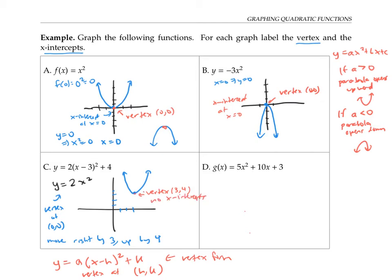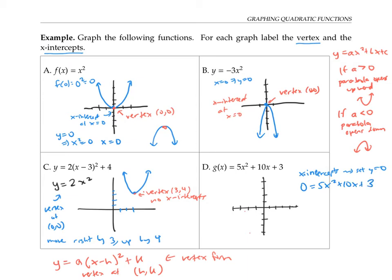For the final function, g(x) = 5x² + 10x + 3, the graph will be a parabola pointing upwards because the coefficient of x² is positive. To find the x-intercepts, we set y = 0, since the x-intercepts are where the graph crosses the x-axis. So we solve 0 = 5x² + 10x + 3 using the quadratic formula: x = (−10 ± √(10² − 4·5·3)) / (2·5).